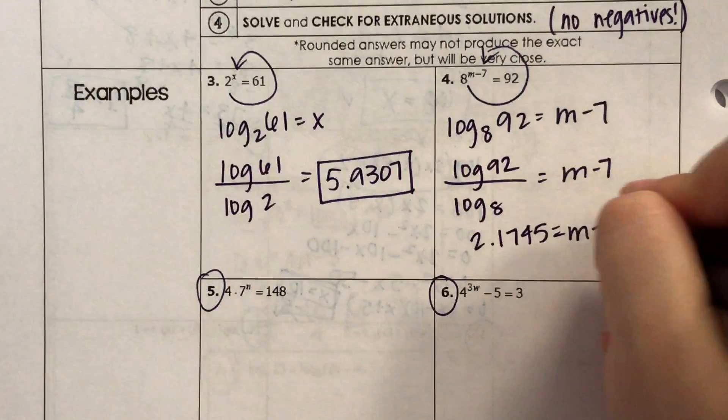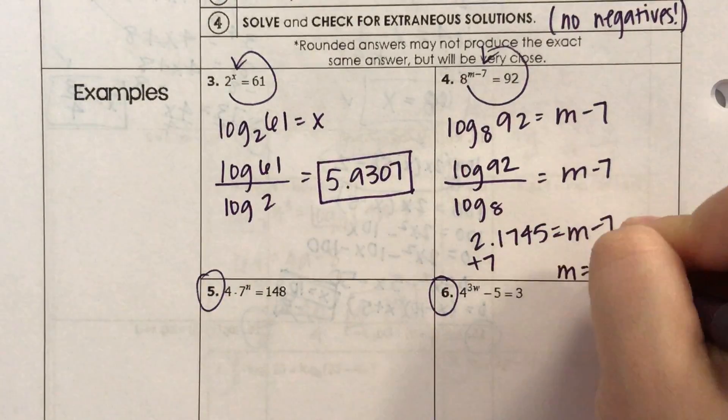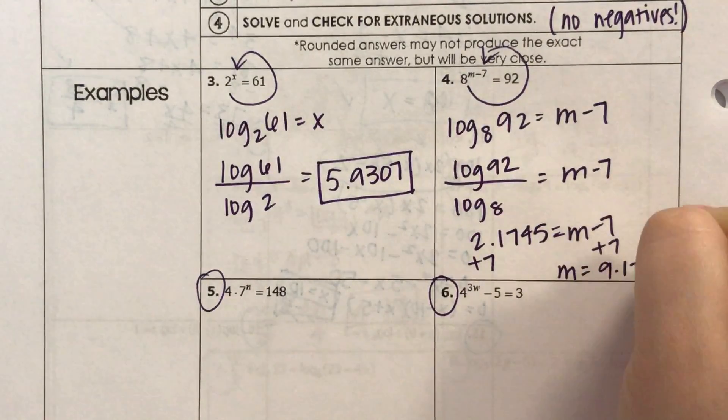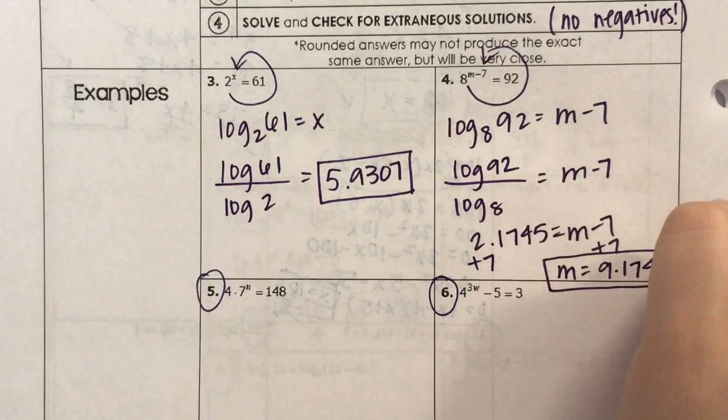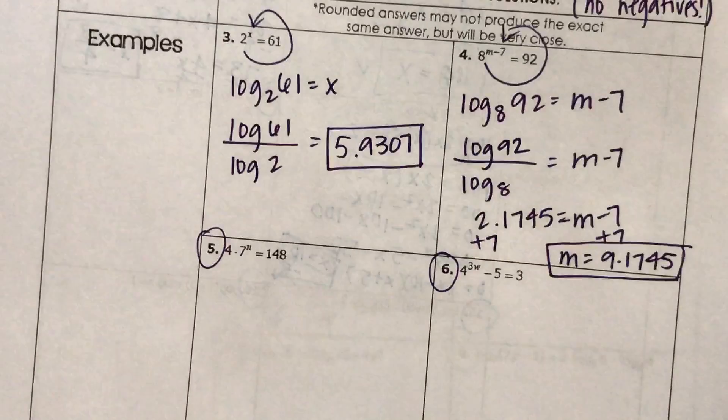And then all I have to do to solve for m is add 7. So we get m equals 9.1745. Alright, try 5 and 6 on your own, and I'll see you in class.